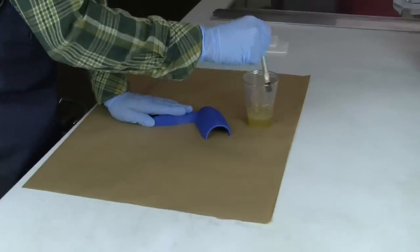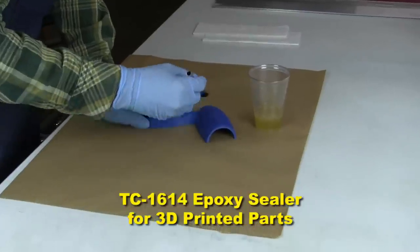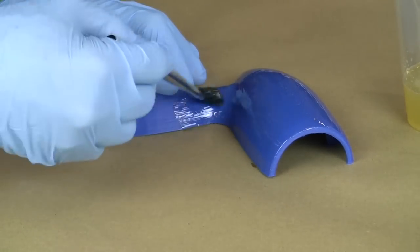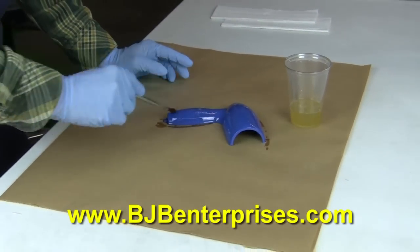We start by sealing our part with BJB's TC1614 Infiltrin Epoxy. This product helps fill the build steps and strengthen the part. More info can be found on BJB's website.